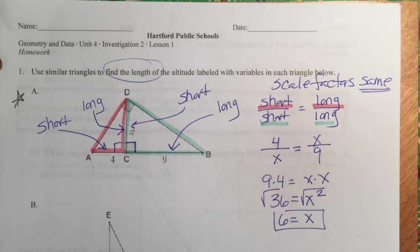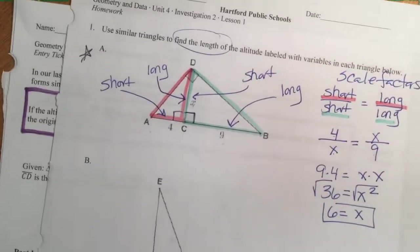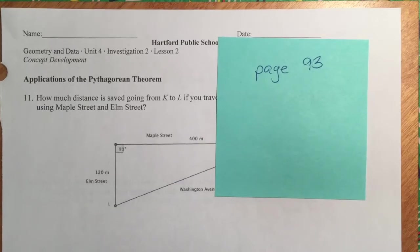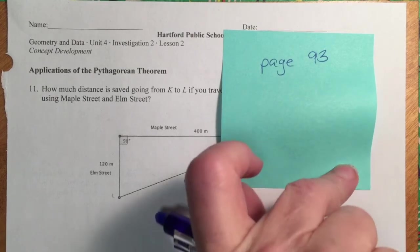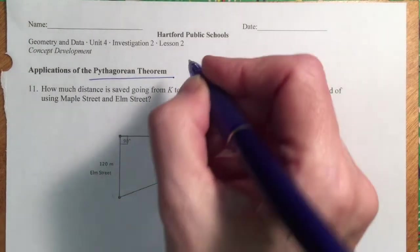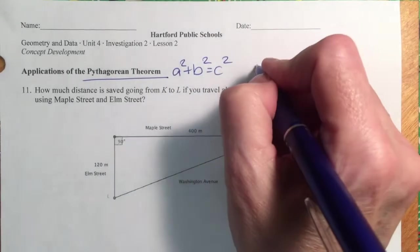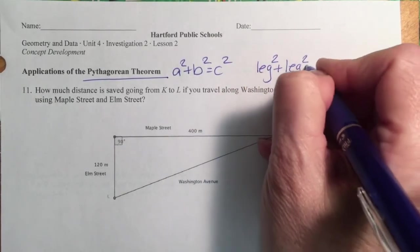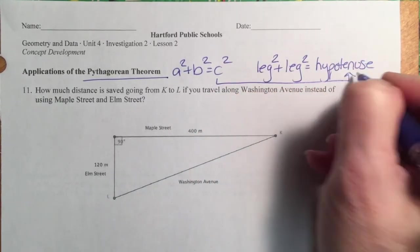You're going to see a problem just like that in your whiteboard chat and in your exit ticket, so replay if needed. Also on page 93, we're going to talk about the Pythagorean theorem: A squared plus B squared equals C squared. A and B are the legs, C is the hypotenuse — leg squared plus the other leg squared equals hypotenuse squared. C is always the hypotenuse.